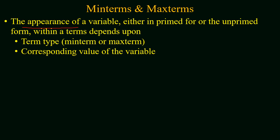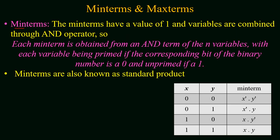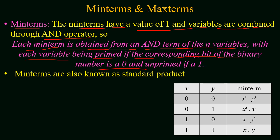The appearance of a variable either in prime form or unprime form within a term depends on two factors: first, the term type — whether the term is a min term or max term — and second, the corresponding value of the variable. For min terms, we know that a min term has a value of 1 and variables are combined using the AND operator. Each min term is obtained from an AND term of n variables, with each variable being prime if the corresponding bit of the binary number is 0, and unprime if the corresponding value is 1.